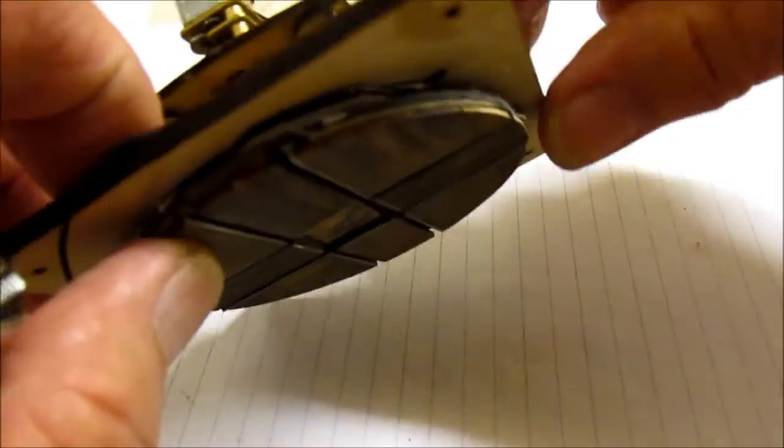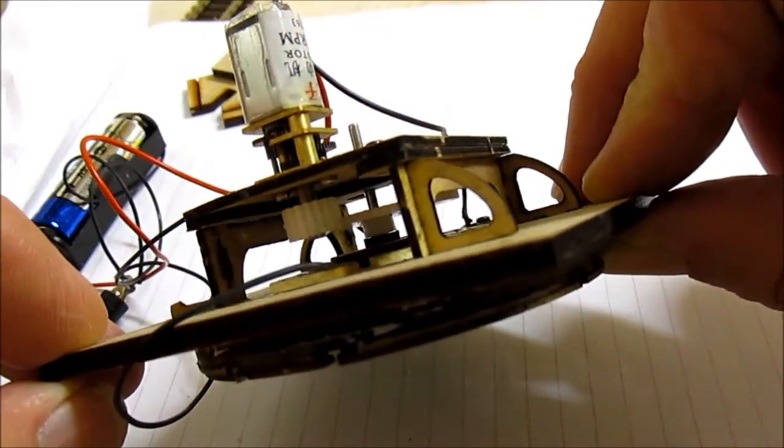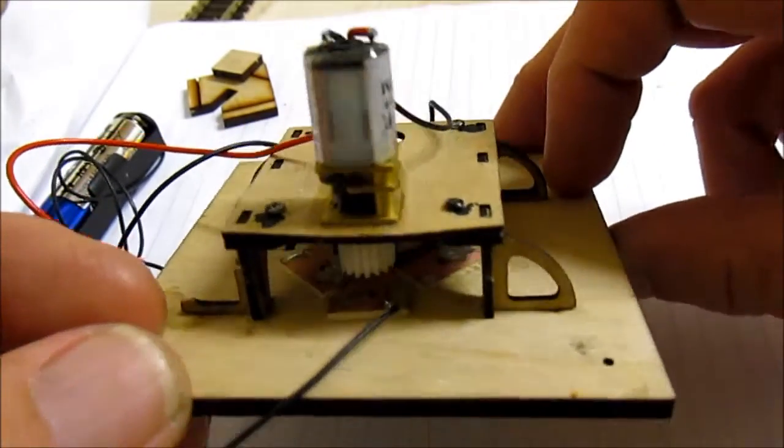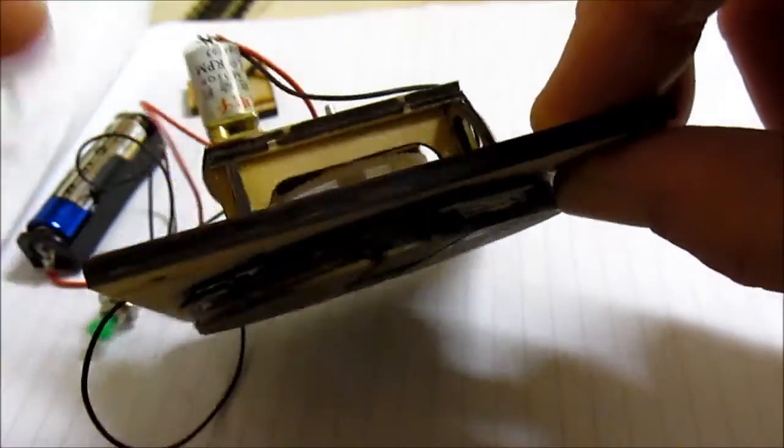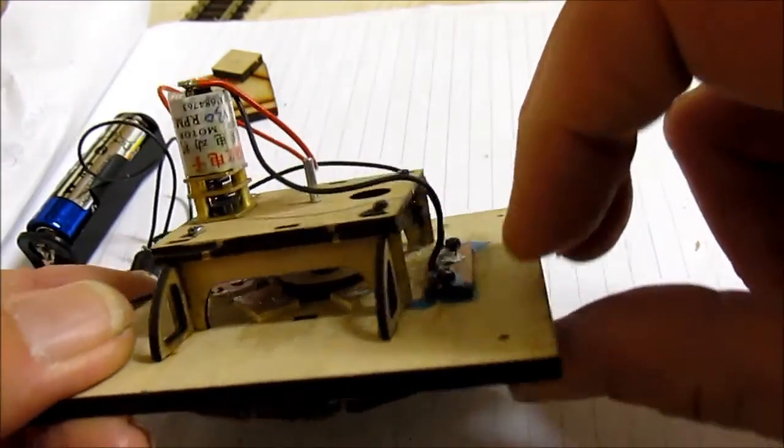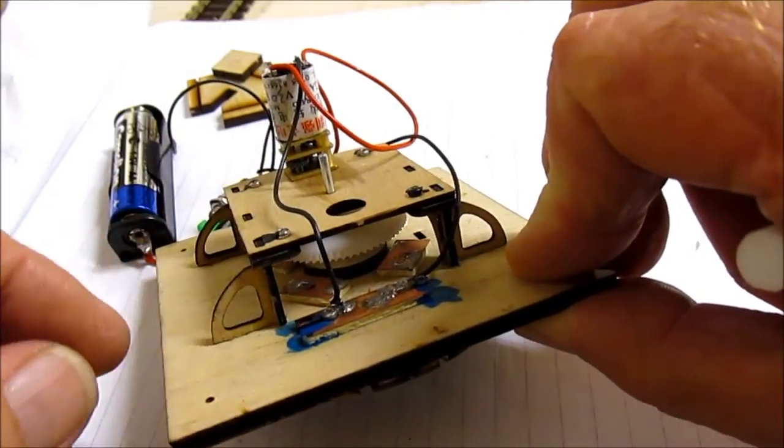Underneath it's got a gear reduction for the main drive shaft. And you can also possibly see just in there is the pickups for the track and that's one of the indexing pickups. There's two of them.